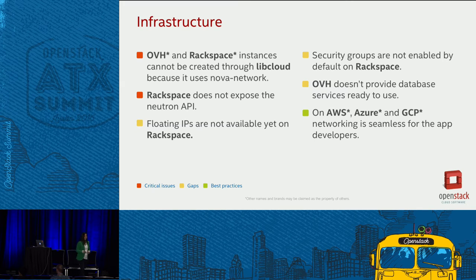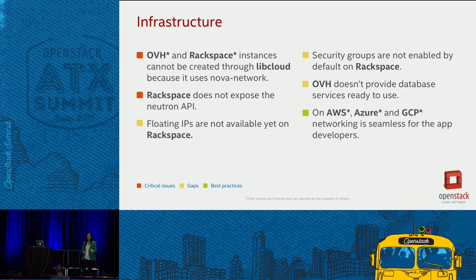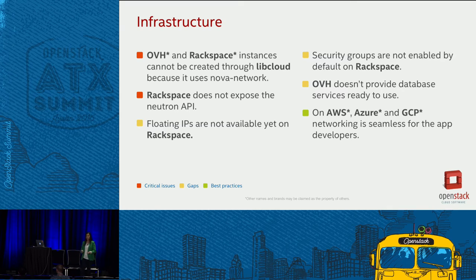At the infrastructure stage, developers create all the resources needed by their apps — like application servers, databases, storage services, networking setup, and security. This was the hardest step for developers on OpenStack. On OVH and Rackspace, instances, security groups, and floating IPs cannot be created using LibCloud SDK because LibCloud uses the compute API, Nova Network, for networking setup, and those providers use Neutron. LibCloud has not implemented the Neutron API.